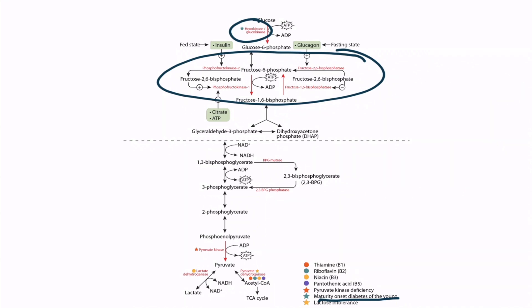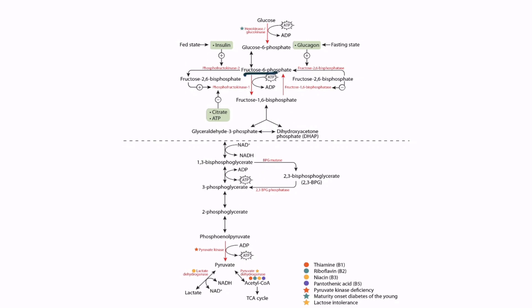Let's focus on this part of the pathway. Notice that fructose-6-phosphate can be converted into fructose-2,6-bisphosphate, shown on both sides. The left side shows how fructose-2,6-bisphosphate is regulated during glycolysis, and the right side shows how it's regulated during gluconeogenesis. Fructose-6-phosphate is converted to fructose-2,6-bisphosphate by the enzyme phosphofructokinase-2. Fructose-2,6-bisphosphate induces glycolysis by upregulating phosphofructokinase-1, which converts fructose-6-phosphate to fructose-1,6-bisphosphate. Also notice that citrate and ATP inhibit this conversion.